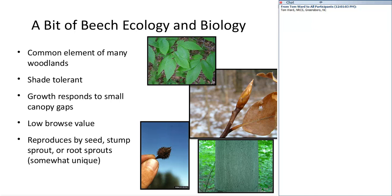Beech reproduction is both sexual and asexual — it can reproduce by seeds. Ralph Nyland did some work looking at seed-origin beech in the Adirondacks and found that the overwhelming majority of stems — perhaps 60 to 75 percent — are of sprout origin. When I say sprouts, I'm usually talking about root sprouts. This is a phenomenon where the parent tree's root system sends suckers or sprouts up from the roots. They're genetically identical to the parent, connected to an existing root system, and also shade tolerant and of low browse value.